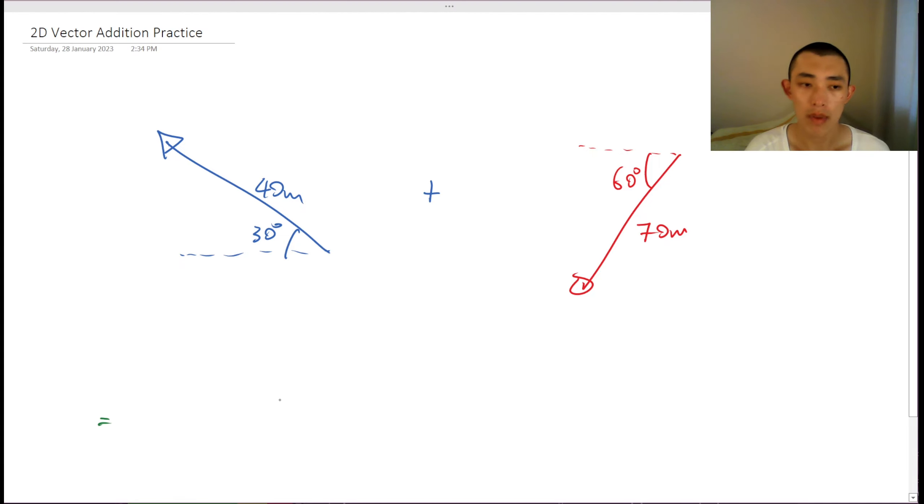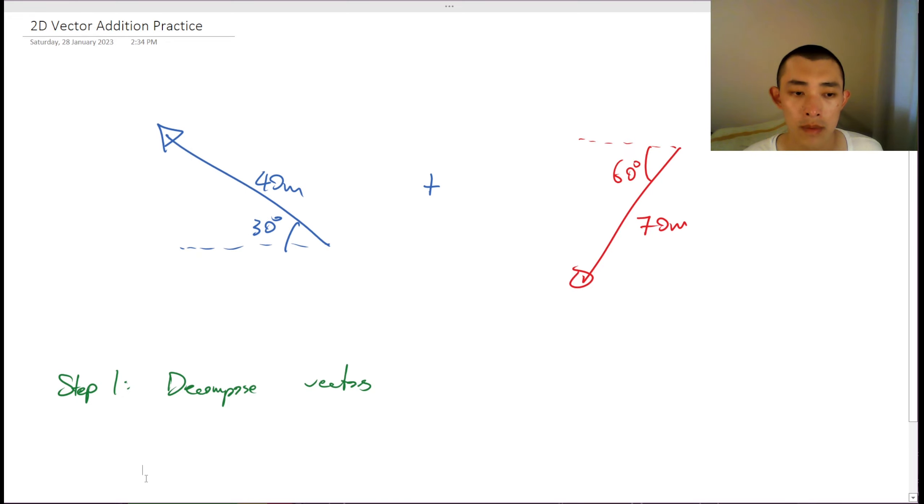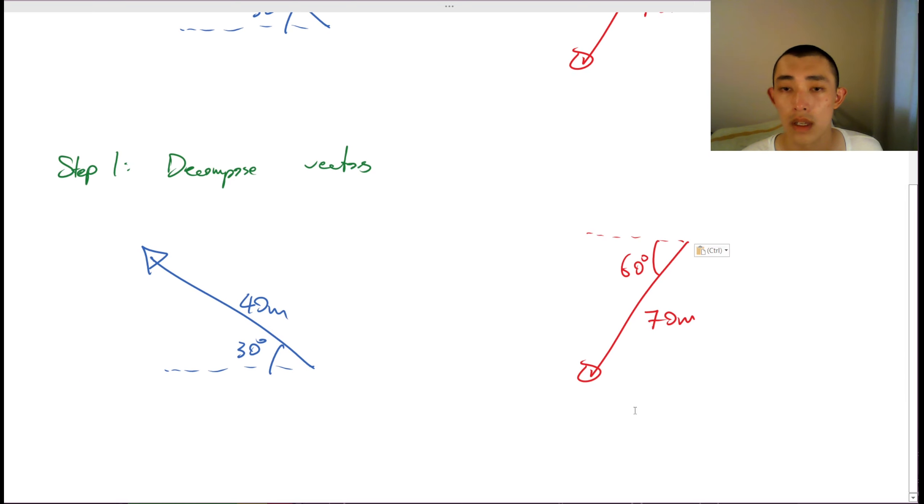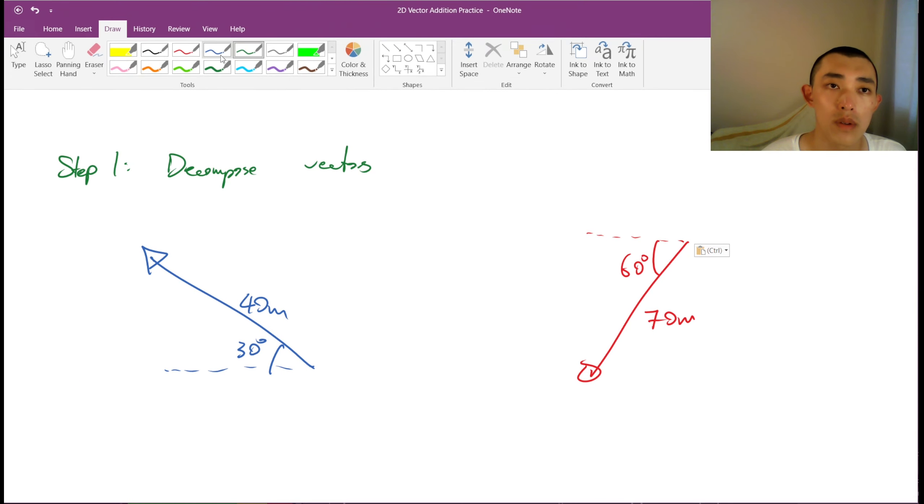So the first step, remember step one, step one is to decompose vectors. Decompose vectors. So let's decompose both of our vectors here. I have this one and I have this one. And so I'm going to decompose my vector here.